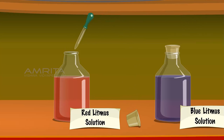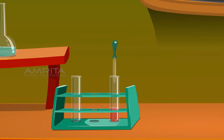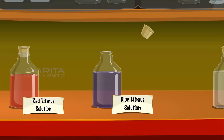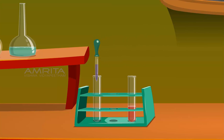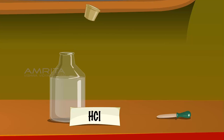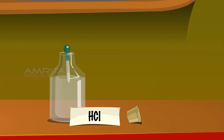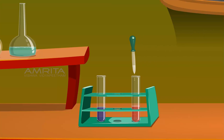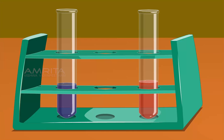Take the red litmus solution and pour it into a test tube. Take the blue litmus solution and pour it into another test tube. Take a few drops of HCl solution from its bottle using a dropper and add this to the test tube containing the red litmus solution. The colour of the solution remains the same.